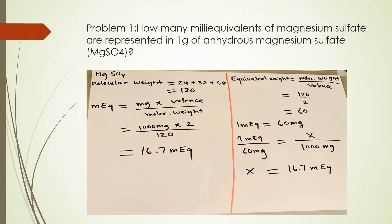Here we have to find the molecular weight of magnesium sulfate, and that is 120. So 24 plus 32 plus 64. The valence of magnesium sulfate is 2. Let me know if you want me to do a separate video on valence. Let me know in the comments.